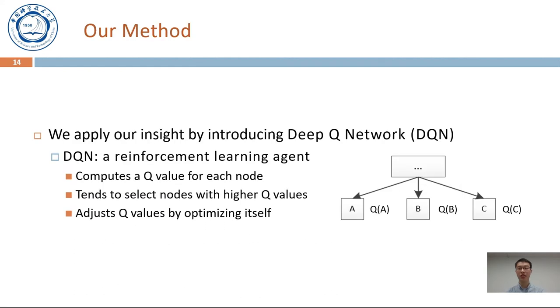In our implementation, we apply our insight by introducing deep Q-network. DQN is a reinforcement learning agent. For each node, it computes a Q-value. Here, the Q-value represents the probability of the node representing a supporting lemma. Then, it tends to select nodes with higher Q-values. It adjusts Q-values by optimizing itself.